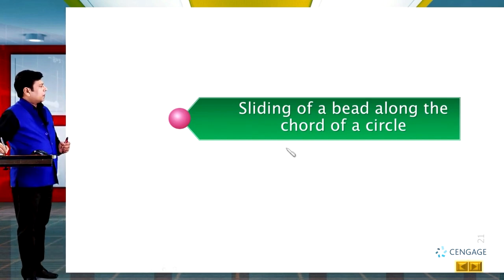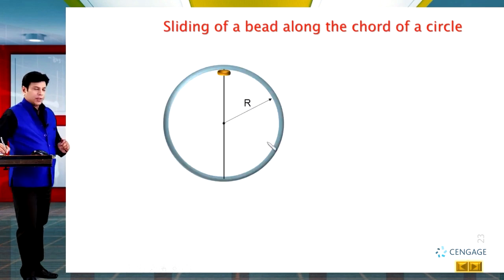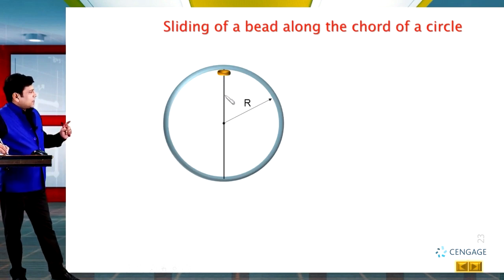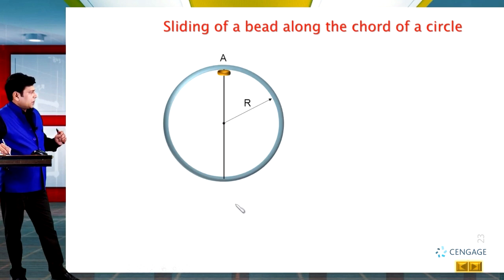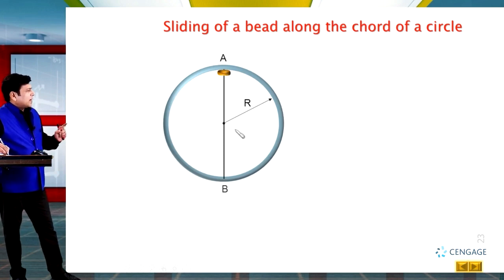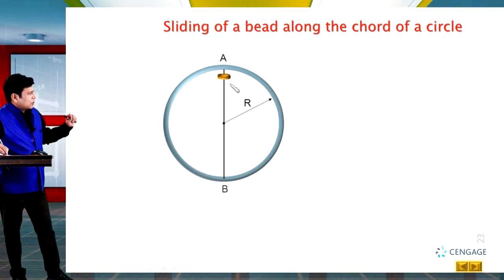Let us make a diagram of a circle placed in the vertical plane. The radius of the circle is R, and this is a thin wire clamped along the diameter of the circle — say this is AB. A bead is placed at the highest point of the circle. This bead can slide along this wire. If I release this bead, it will start moving in the downward direction with initial velocity zero.